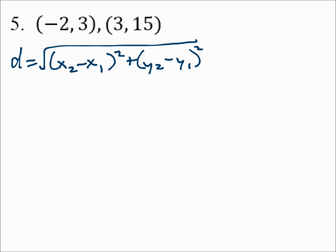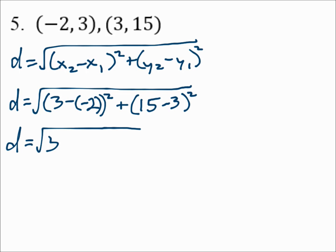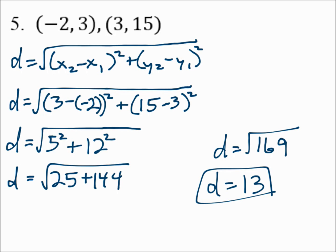Number 5: find the distance between the two points using the distance formula. X2 is 3 minus X1 which is negative 2 — watch your minus signs. Y2 is 15 minus Y1 which is 3. Simplifying: 3 minus negative 2 is 5, and 15 minus 3 is 12. 5 squared is 25, 12 squared is 144, and 25 plus 144 is 169. The square root of 169 is 13, so the distance is 13.